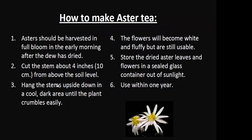I found a small recipe on how to make aster tea. It usually involves cutting the aster during the full bloom in early morning, making sure that you make a precise cut four inches above the soil level. You would then hang it upside down in a dark area. The flower itself becomes white and fluffy and easily crumble, but it becomes usable for tea. You would store the dried aster leaves and flowers in a sealed glass container and that can keep up to one year.